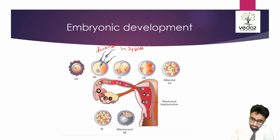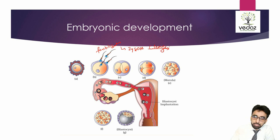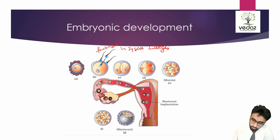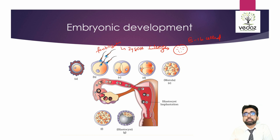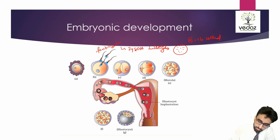After the zygote, cleavage starts. What is the difference between cleavage and cell division? We have seen this in the last lecture. After cleavage, cells are formed. This 8 to 16 cell stage, which is packed together like mulberry fruit, is known as morula.